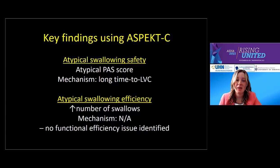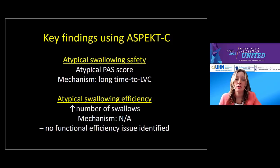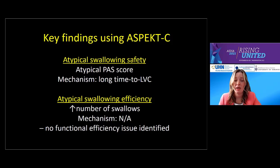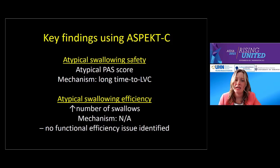Key findings for this patient that ASPECT-C allowed us to elucidate: there was complete laryngeal vestibule closure; however, it was occurring too slowly compared to data from healthy individuals, resulting in instances of penetration and aspiration before the swallow. Because we knew the mechanism of impairment, we tried a bolus hold with this patient, and it eliminated instances of penetration and aspiration within liquids. We also noticed that while the patient has piriform sinus residue, the amount is typical when compared to healthy reference values.